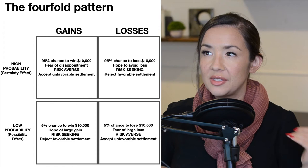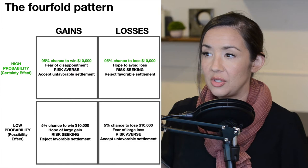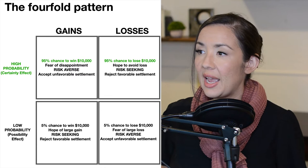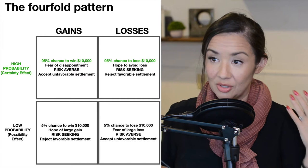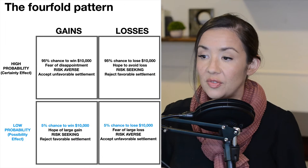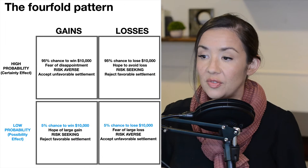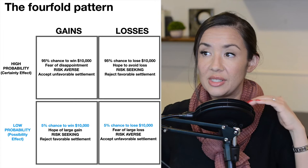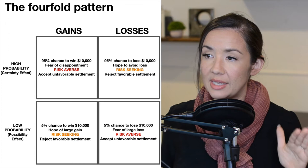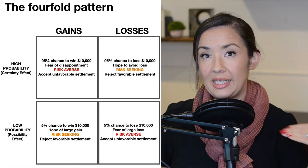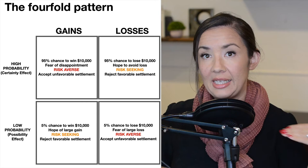Kahneman and Tversky developed a fourfold pattern grid to help us understand the relationships of gains and losses for high and low probabilities. The grid includes a 95% chance of winning $10,000, a 95% chance of losing $10,000 — both relating to the certainty effect — and a 5% chance of winning $10,000 and a 5% chance of losing $10,000 for low probability events. Pay attention to the differences in risk aversion versus risk-seeking behaviors as we go through each quadrant.